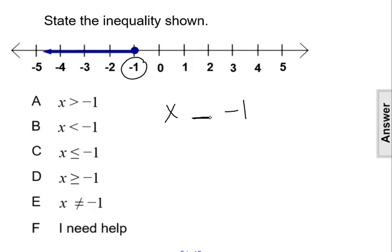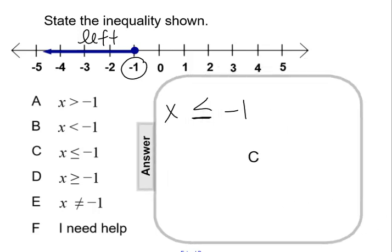We see that the line is going off to the left of negative one. So we have all numbers to the left of negative one as our variable options, or all numbers that are less than negative one, but also equal to negative one. So the inequality is x is less than or equal to negative one, or answer choice C.